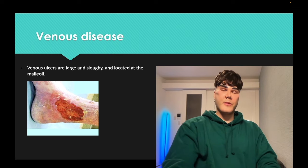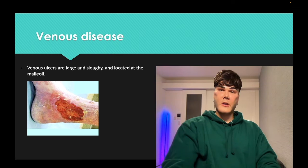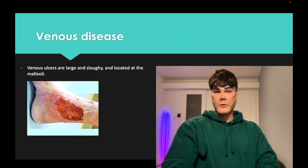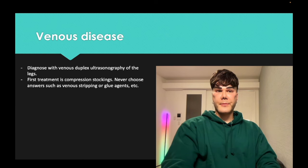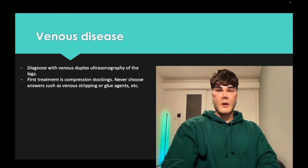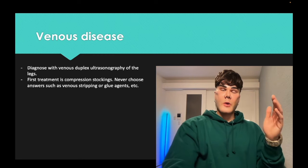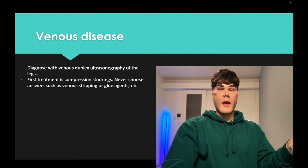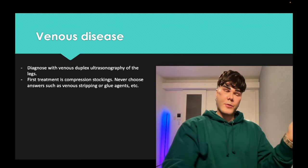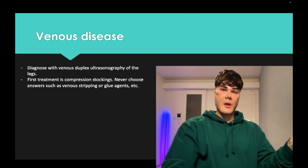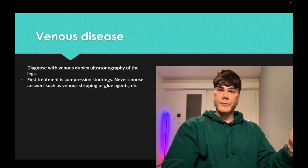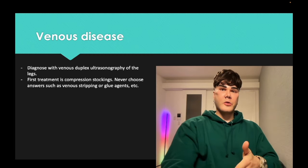Arterial ulcers are small and punched-out, usually distal on the feet and toes. Venous ulcers in contrast are large and slothy, located at the medial malleoli. For diagnosis, duplex ultrasonography — ultrasound is 100% of the time the first step for venous disease. For arterial disease we do ABIs first (14 out of 15 times); for venous disease, it's ultrasound.